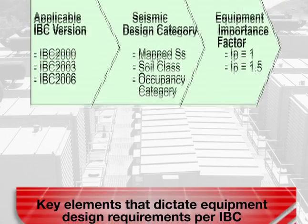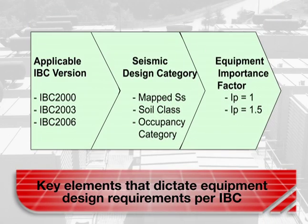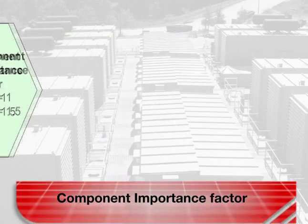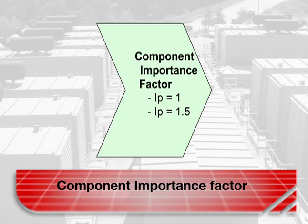Actually calculating the seismic design category is something that consulting engineers do, but you should be familiar with what goes into that calculation. Another key term is importance factor, or IP. Equipment is assigned an IP of 1.5 if it is needed for the continued operation of the facility. Emergency standby power systems are in this category, and equipment in this category needs to be certified as meeting these standards.